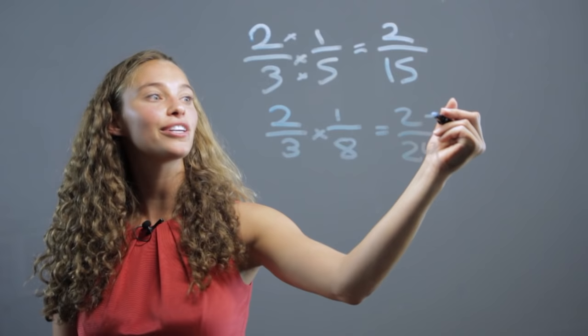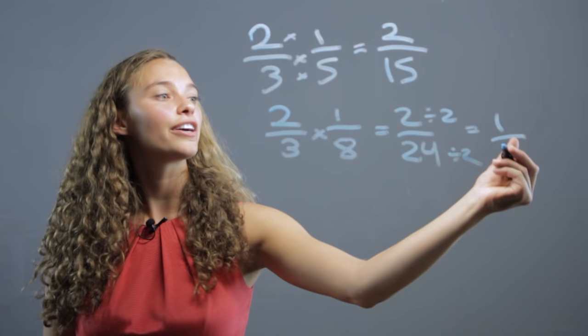Well, 2 goes into both 2 and 24, so we divide them both by 2, and we get 1 over 12.